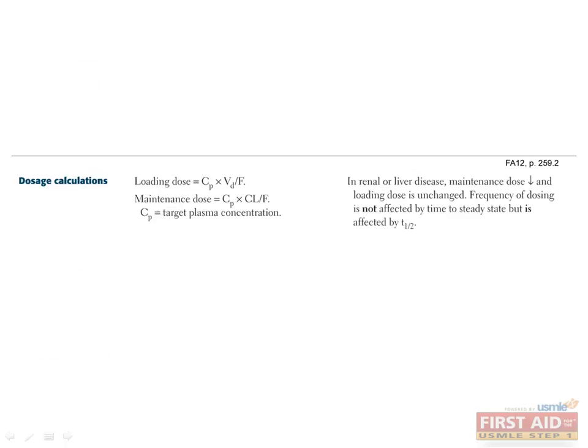Consider the question, how much of the drug do I need to give in order to rapidly reach a target plasma concentration of CP? The answer is given by the loading dose, which is defined as the plasma concentration times the volume of distribution divided by the bioavailability. Note that clearance is not part of the equation for loading dose.